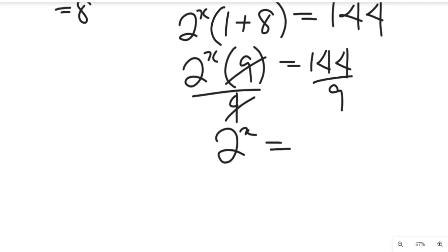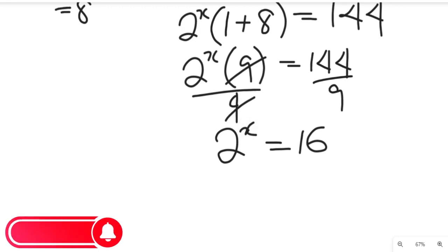144 divided by 9 will give us 16. So we have 2 to the power of x equal to 16. Now this equation is becoming simpler.